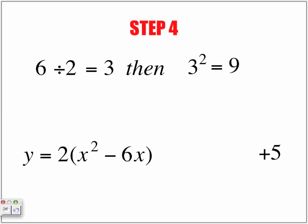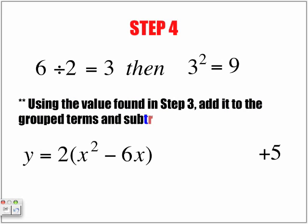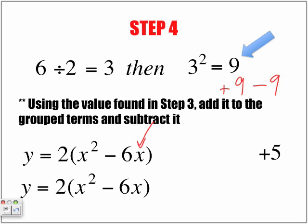So step 4. This is what we've done in the previous step. We've taken the x value, value in front of x. We've divided it by 2 to give us 3, and then we've squared it to give us 9. And so what we're going to do with that is we're going to do the following. We're going to use the value found in step 3, add it to the grouped terms, and then subtract it. So what we're going to do is we are going to add to this a plus 9 minus 9. So here's what we have, our original statement, and then this is what we're going to be adding to it. And again, let's not forget the plus 5.